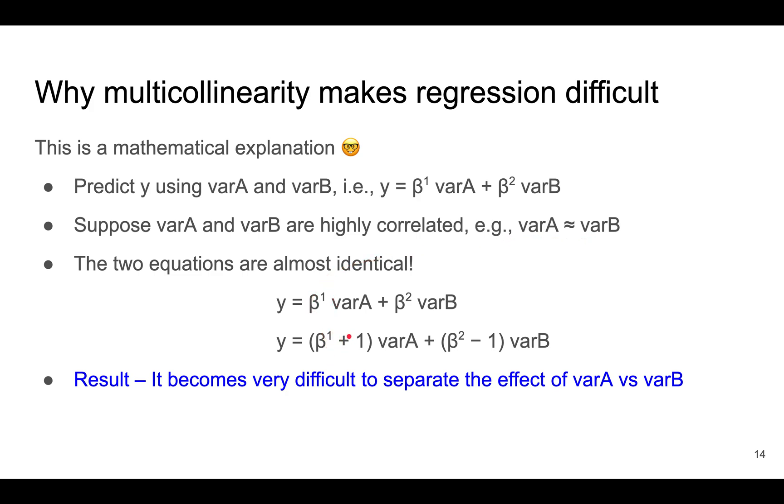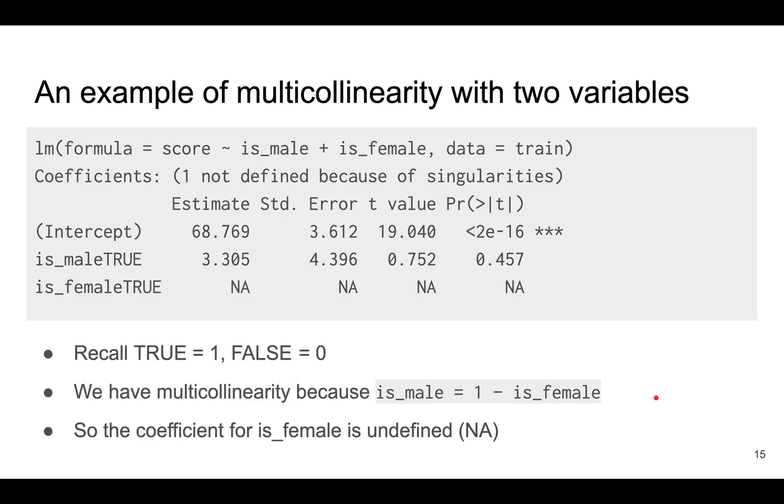In that case, these two equations are almost exactly the same. When you increase β¹ by 1 while decreasing β² by 1, you get almost exactly the same y. This means it's almost impossible to use statistics to separate out the effects of variable A versus variable B.